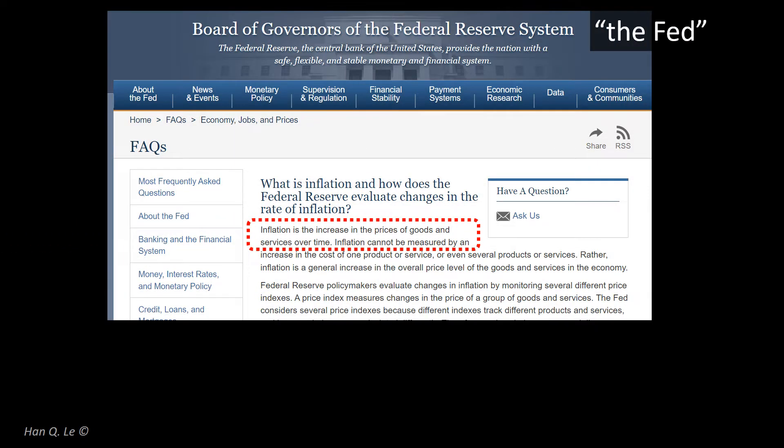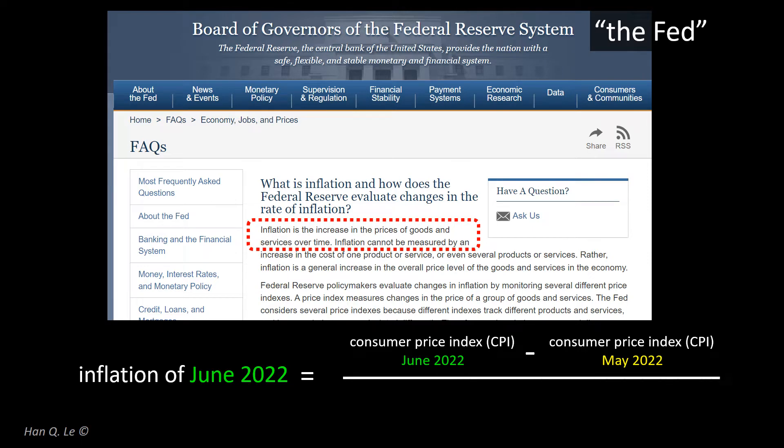Inflation is the increase in the price of goods and services over time. For the US, the Fed computes the Consumer Price Index monthly. Inflation is the rate of month-to-month change of the CPI.